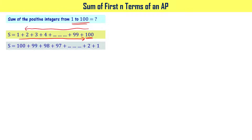Here is a trick: if you write the same sum S in reverse order, you get the same value. 1 plus 2 and 2 plus 1 give the same value. So when we add these two versions of S together, we get 2S.